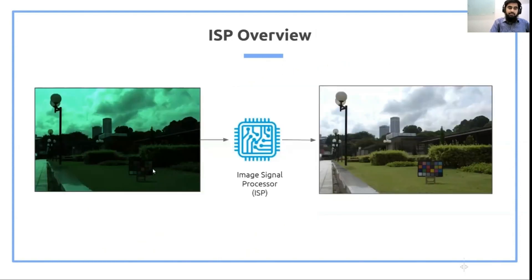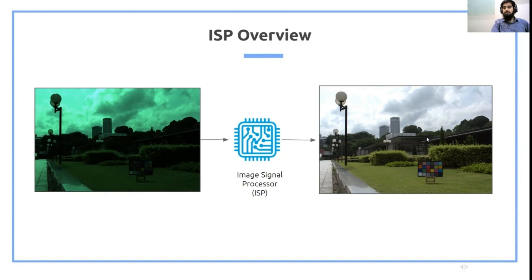Here on the left-hand side, you can see the input that an ISP receives — this is essentially the output that the sensor generates and then sends to the ISP. The better the ISP, the better the performance and the better the output. The ISP is responsible for converting this greenish and darkish input into viewable, pleasing images that we see as an output of the camera.